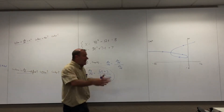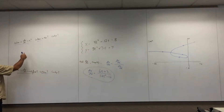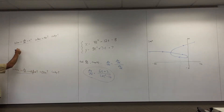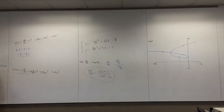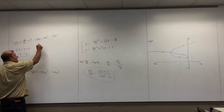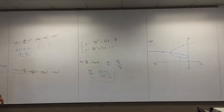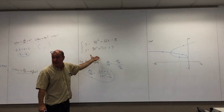We also typed it into the graphing calculator and sketched it. Now I've got some questions — when is the derivative zero? The derivative is zero when the numerator equals zero. If you move the three over and divide by six, that gives negative one-half. We like to think of t as time, so that's when it equals zero.